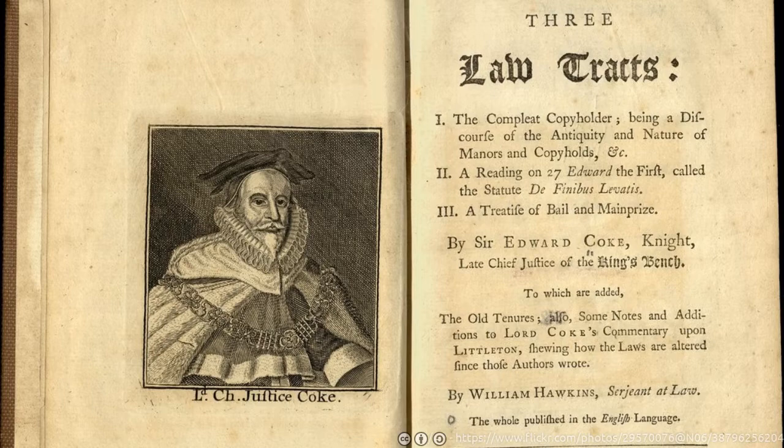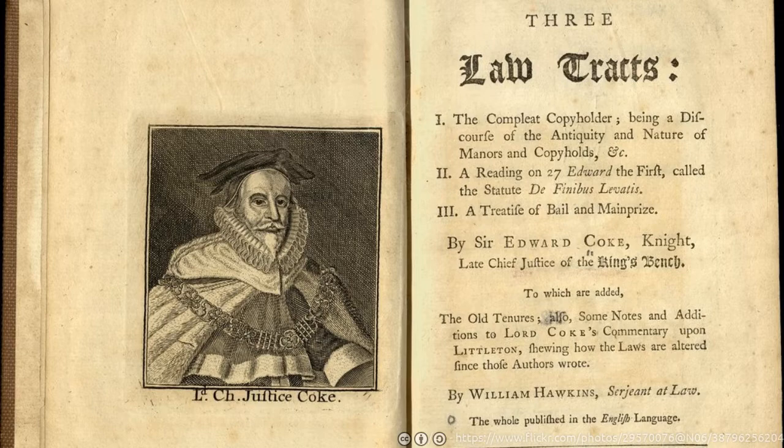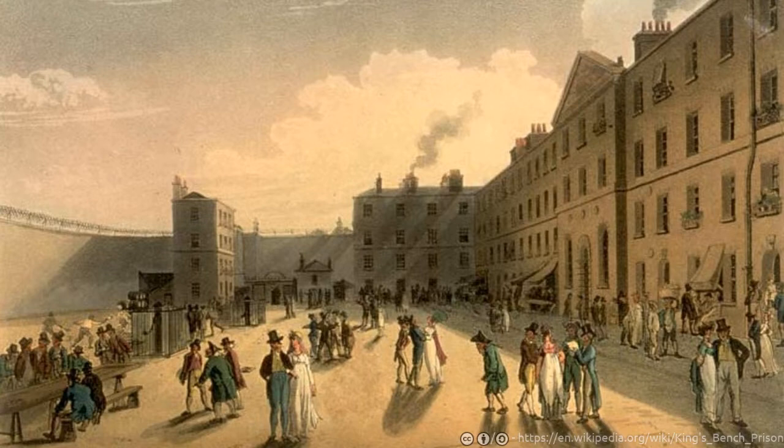Later in the 1700s, two Lord Chief Justices, John Holt and William Murray, clarified the scope of mandamus when the King's Bench recognized in a few cases that a writ of mandamus would only issue if there was no other adequate remedy.